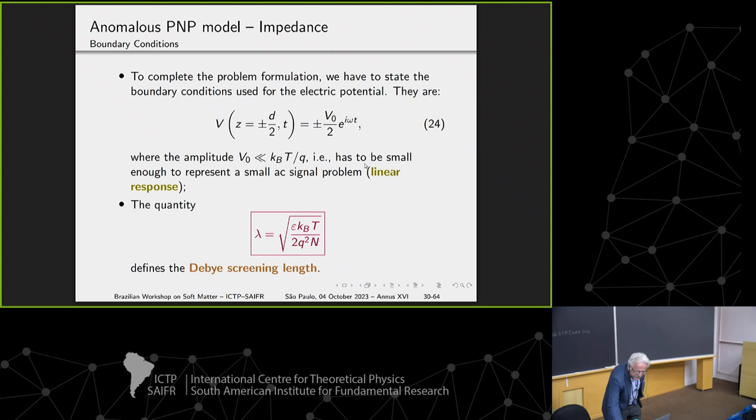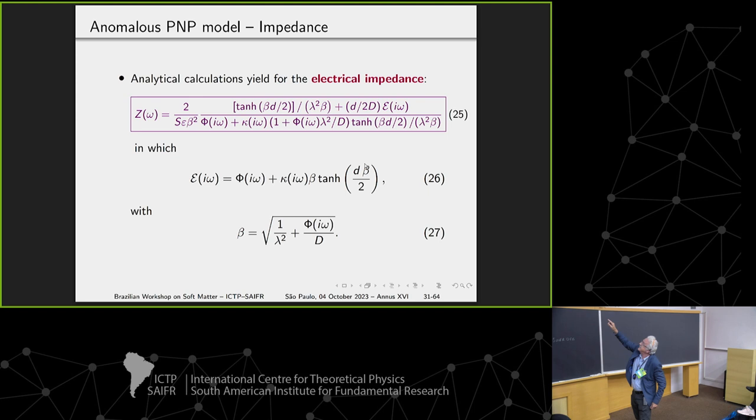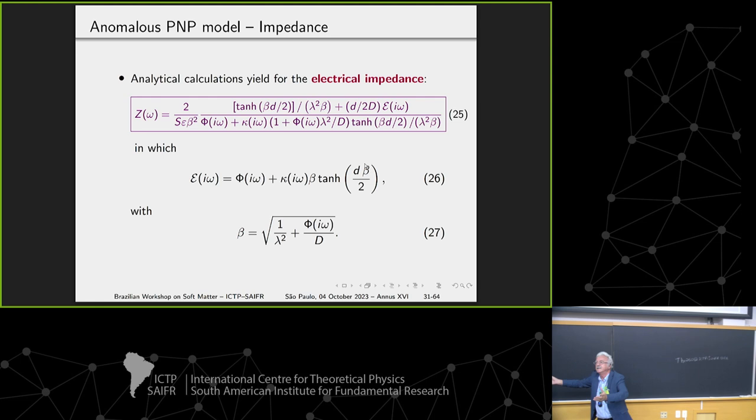After doing some of these calculations, you obtain, for instance, among several others, an impedance in closed form this way. Two points deserve some attention here: kappa in the denominator and phi,